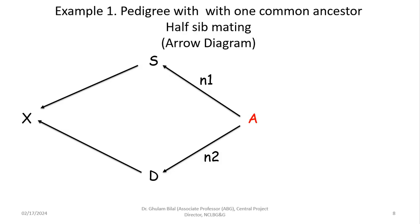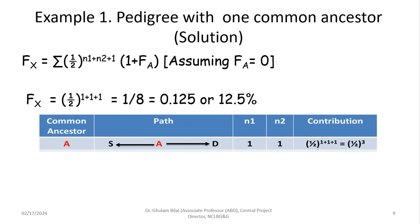Let's do a simple example with one common ancestor — this is the half-sib mating arrow diagram. We have individual X, whose male parent is S and female parent is D, and both share common ancestor A. From A to S is n1, and from A to D is n2. Solving: Fx = (1/2)^(1 + 1 + 1) = 1/8 = 0.125, or 12.5%. We have two arrows from A — one to D (n2 = 1) and one to S (n1 = 1) — so 1 + 1 + 1 = 3, giving 1/2^3 = 12.5%. This individual is 12.5% inbred with an inbreeding coefficient of 0.125.